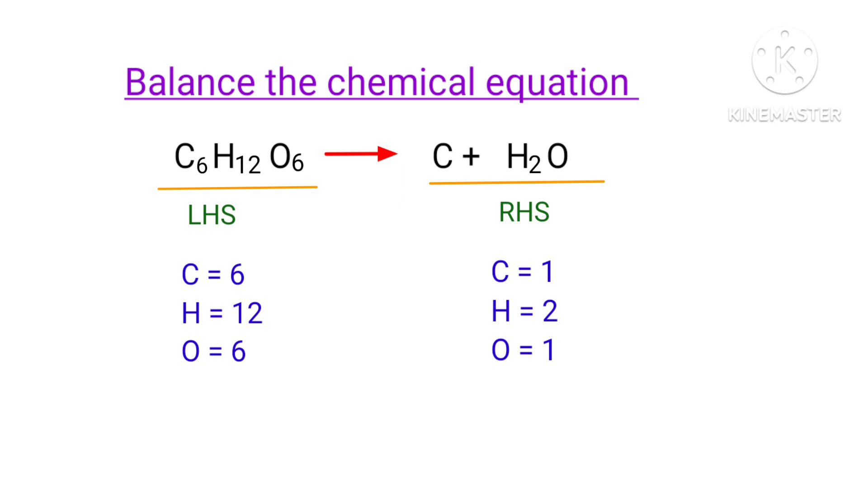The number of atoms are not balanced on both sides. To balance the chemical equation, we need to make use of coefficients. A coefficient is a number that we place in front of a chemical formula.